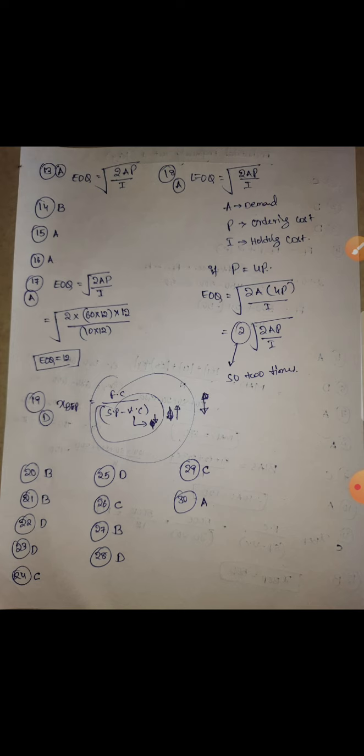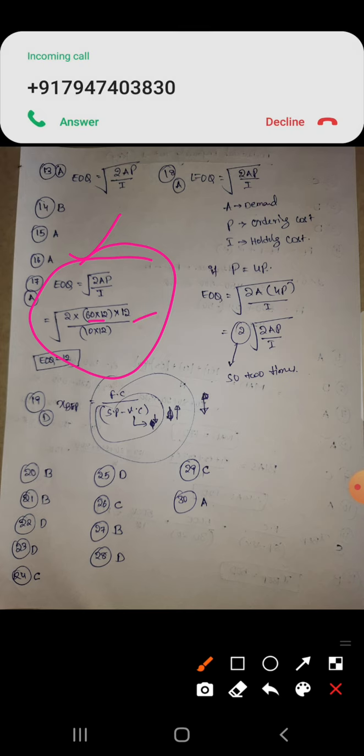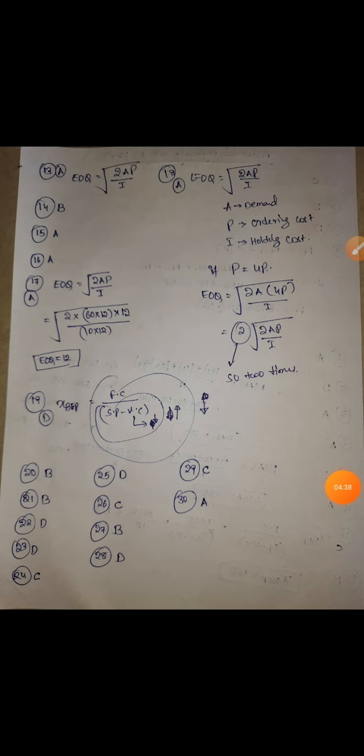Sixteenth: in ABC analysis, A requires 10 to 20 percent of items. Seventeenth is again EOQ question. Here, demand is calculated for 12 months, 60 per month, so I multiplied by 12. Here, ordering cost is given per year, so multiply by 12. Holding cost is also per year, so multiply by 12. That's how you got the answer.